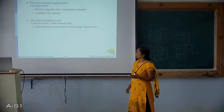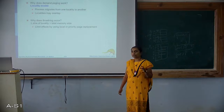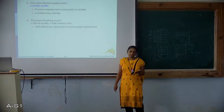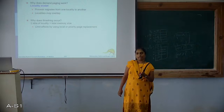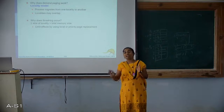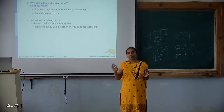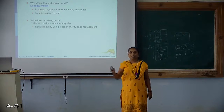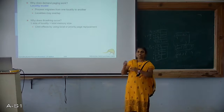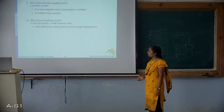Why does thrashing occur? Consider the summation of locality sizes. If we know the number of pages a locality needs and we provide that many frames, there will be no thrashing — all required pages are in main memory. But if a locality demands 10 frames and you only allocate 5, it is given fewer frames than required. It will continuously ask for more pages, those pages keep getting replaced, and hence thrashing occurs.